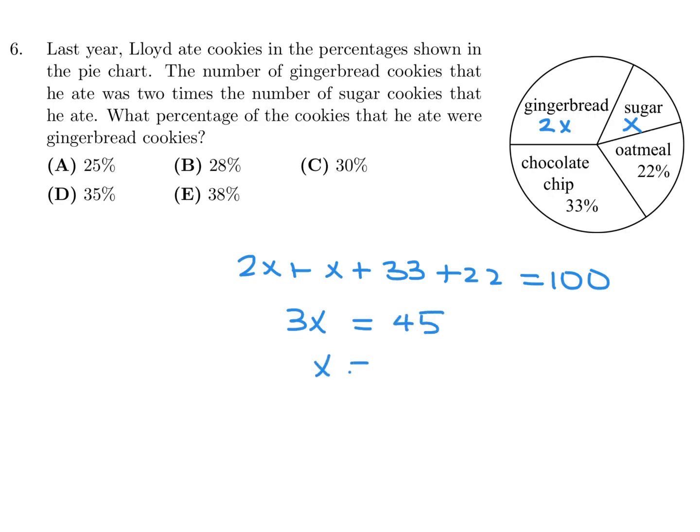So that's 3x is equal to 100 minus 55, so 45, x is 15. So therefore, gingerbread is 2x, so that's 30%. And therefore, number 6, the answer is C.